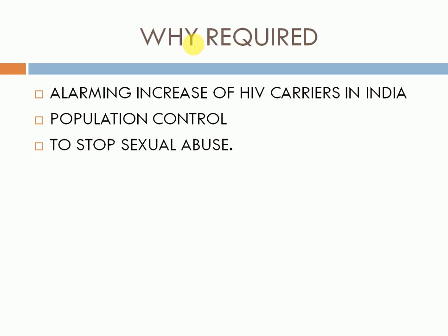Apart from that, the population of India is 130 crores and the present generation needs to know about contraceptive methods which can control the population in the near future. Moreover, according to a study by the World Health Organization, 1 in every 10 children is sexually abused. This WHO data shows that 1 out of every 10 children is sexually abused at a young age, and this leads to trauma for years.